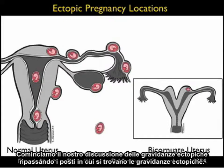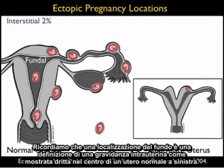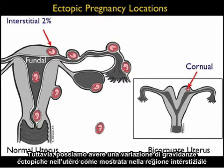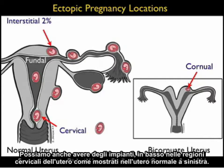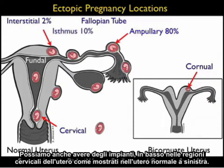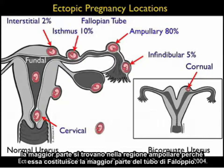Let's begin our discussion of ectopic pregnancies by reviewing the locations where they are commonly found. We see here a normal uterus to the left and a bicorneate uterus to the right. A fundal location is the definition of an intrauterine pregnancy. However, we can have variants of ectopic pregnancies within the uterus — in the interstitial location in the normal uterus and in the corneal region in the bicorneate uterus. We can also have implantations low within the cervical region. Most ectopic pregnancies will be located within the fallopian tube, and of those the majority will be found in the ampullary region.